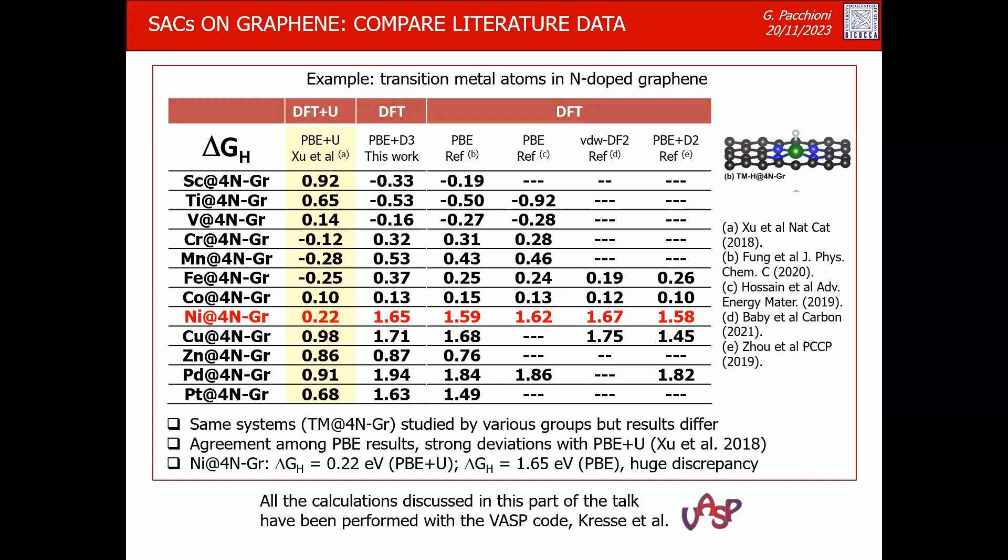The key difference: those four studies used standard PBE, while the Nature Catalysis paper used PBE+U — a correction to include self-interaction. This was shocking for two reasons: changing from PBE to PBE+U doesn't just shift numbers slightly, it completely changes the picture. And a general comment — I found it shocking that these four papers were published after the original Nature Catalysis paper, yet none of the authors tried to figure out why their results differed. Having discovered this discrepancy, we investigated what happens when you use different functionals.